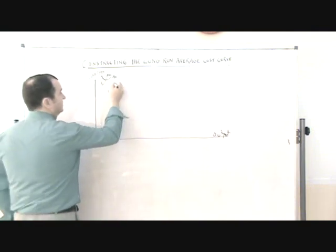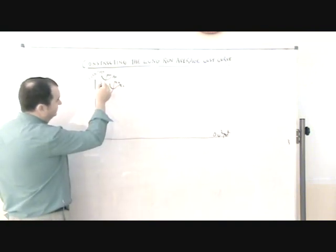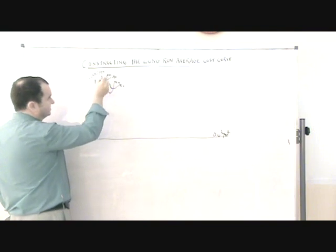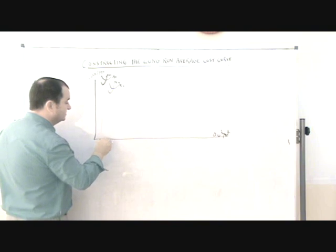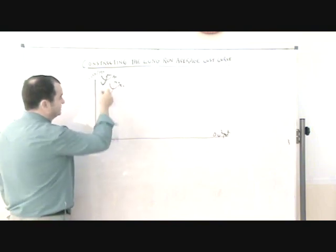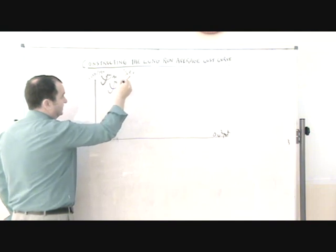And that second short run period might have its new marginal cost and average cost curves. And that allows them to avoid the diminishing returns we saw that was happening in the short run and expand their output significantly in the second short run period to here.